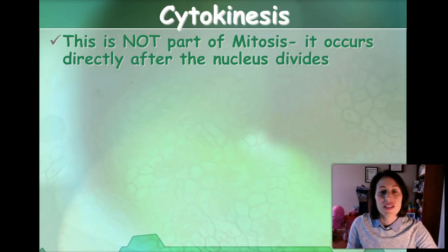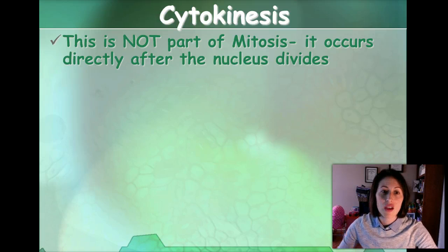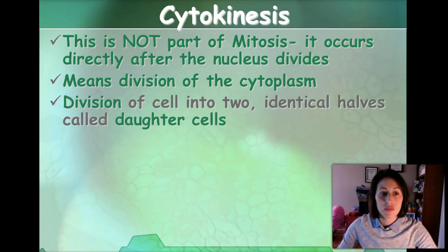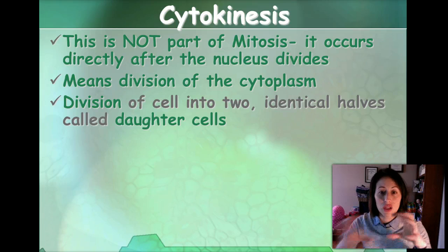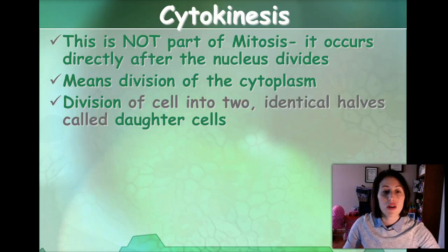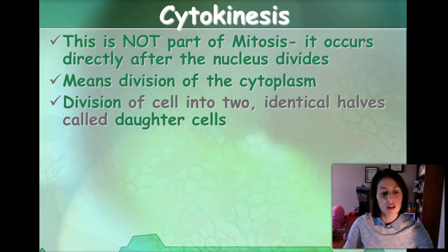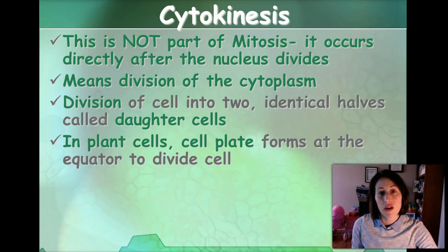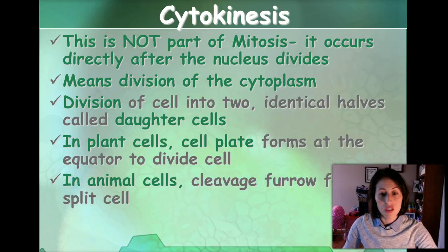Cytokinesis is not an actual part of mitosis — it's part of the cell cycle, but it's its own phase. It occurs directly after the nucleus divides, and it literally means the division of cytoplasm. This is where the division of the cell actually occurs — the cytoplasm pinches in, and then it cleaves and pulls apart, creating two identical halves called daughter cells. There's an extra step in plant cells: a cell plate forms at the equator, which will eventually become the cell wall. In animal cells, it's called a cleavage furrow.